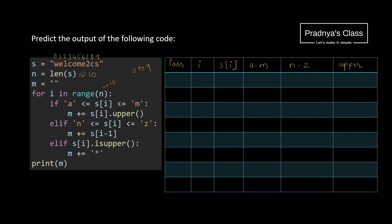If you can do it yourself I suggest you pause the video. Let's work out now. In pass 1 the value of i is 0. s[0] is the first character, which is w. It satisfies the second condition because it is in the range n to z. We need to take s[i-1], and i is 0, so 0 minus 1 is minus 1. At position minus 1 we have the character s, so s gets concatenated to the empty string — we got s.